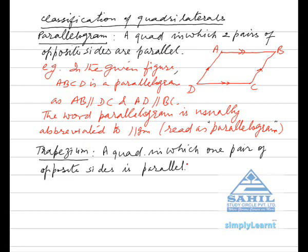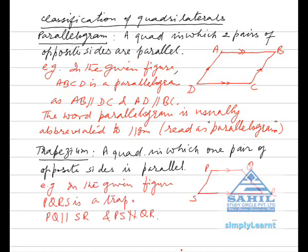Trapezium. A quadrilateral in which one pair of opposite sides is parallel is called a trapezium. For example, in the given figure PQRS is a trapezium since PQ is parallel to SR but PS is not parallel to QR.